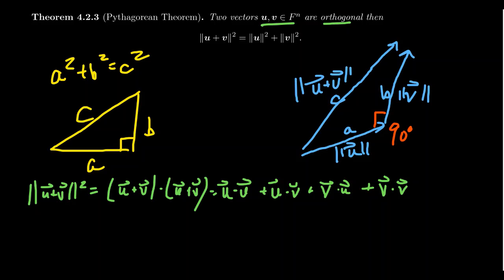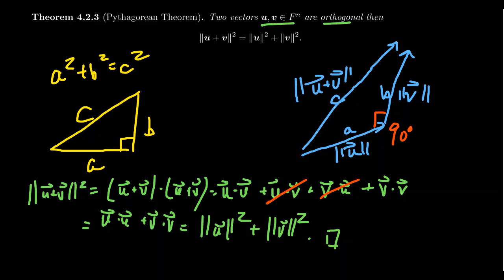But by assumption, because these vectors are orthogonal, u·v equals zero, and so does v·u. This sum would simplify to be u·u plus v·v. A vector dot itself is just the square of its norm. This gives you ||u||² plus ||v||², thus proving the identity we wanted. So the Pythagorean theorem holds in general vector spaces if we can connect this notion of orthogonality with the notion of perpendicular angles.